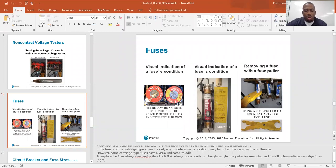To replace the fuse, always de-energize the circuit first. Turn it off. Always use a plastic or fiberglass-style fuse puller for removing and installing low-voltage cartridge fuses. That would be this guy right here. Used to have one. Do not know where it is. But it's non-conductive, so when you're reaching in panels and pulling out fuses, this is the safer way to do it.